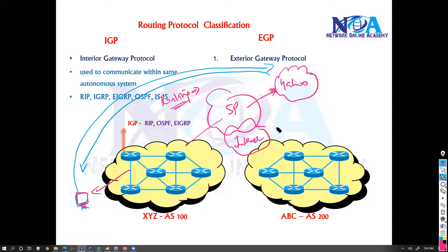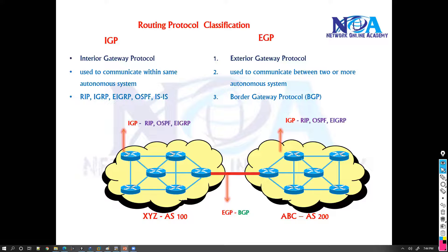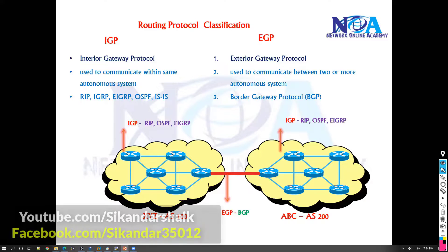That's where the BGP protocol comes into picture. BGP is responsible for exchanging routes between different autonomous system numbers. It falls under the category of EGP — Exterior Gateway Protocol — and the only protocol we use in EGP is BGP, Border Gateway Protocol. In today's networks, we use the internet because of the routing protocol called BGP.